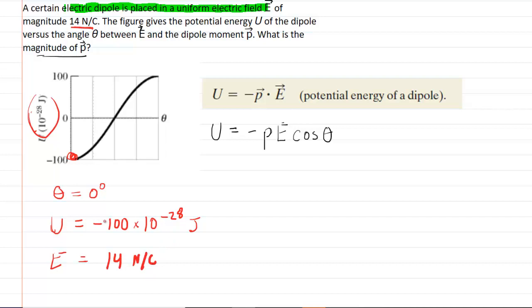So, what we can do is plug in these three known values, and that's going to allow us to calculate the magnitude of the dipole moment. So, let's go ahead and plug in all the knowns.